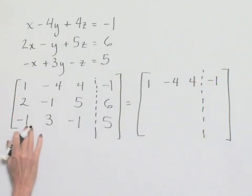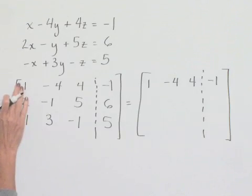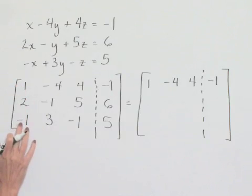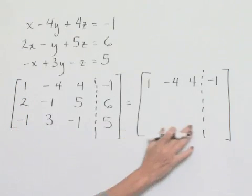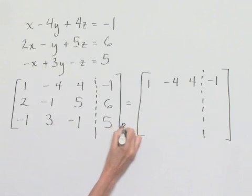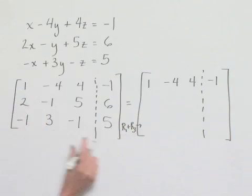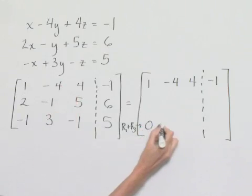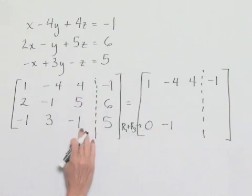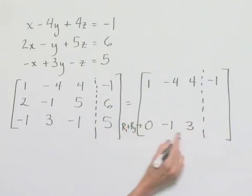Our third equation has a negative 1 in it. If we take the first row and add it to our third row, we can replace row 3 with that result. Row 1 plus row 3 gives us: 1 minus 1 is 0; negative 4 plus 3 is negative 1; 4 minus 1 is positive 3; and negative 1 plus 5 is 4.